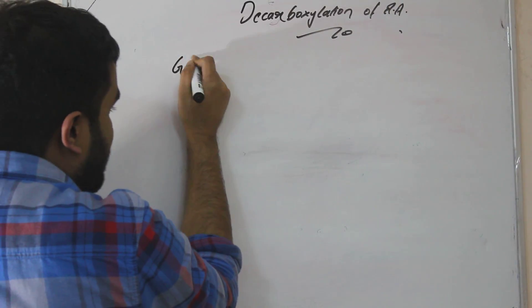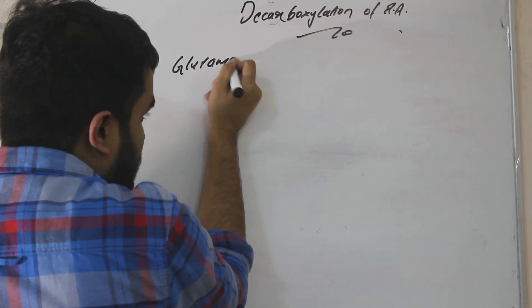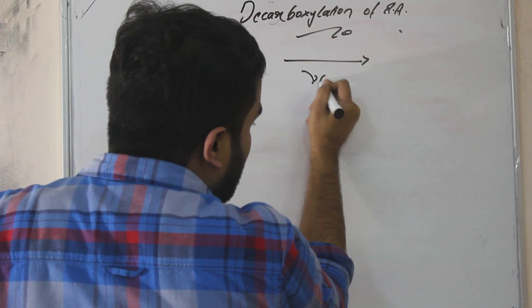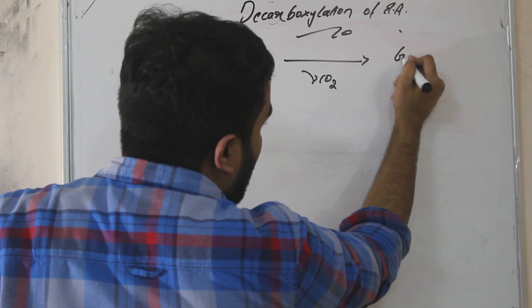There is an important amino acid known as glutamate, our acidic amino acid. Glutamate decarboxylation means what? Removal of what? Carbon dioxide to form GABA.